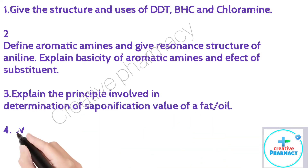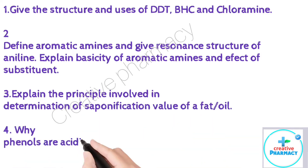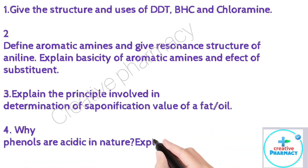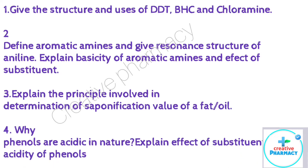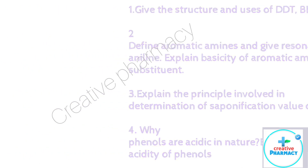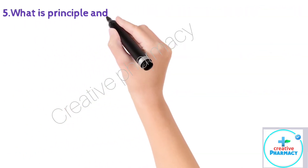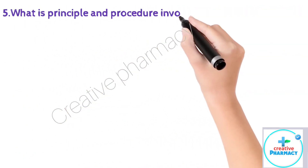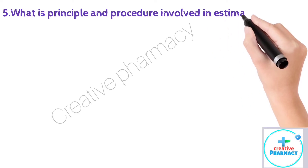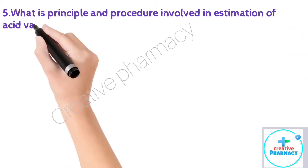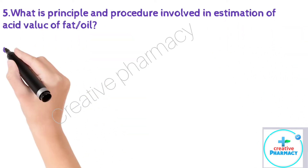Question 3: Explain the principle involved in the determination of saponification value of a fat and oil. Question 4: Why are phenols acidic in nature? Explain the effect of substituents on the acidity of phenols.